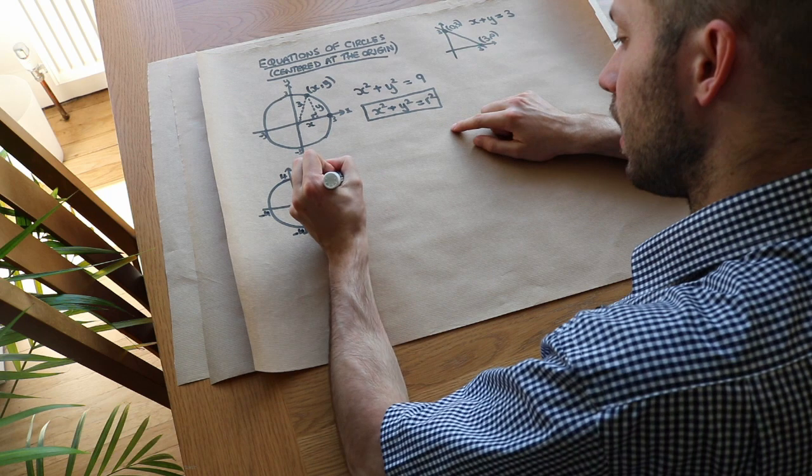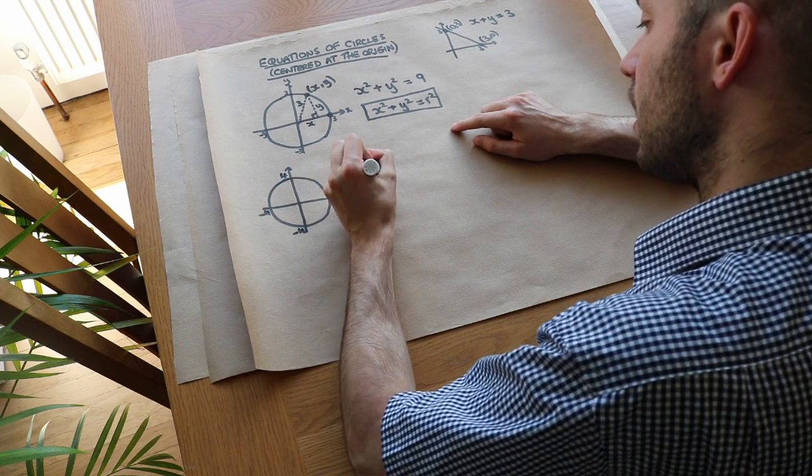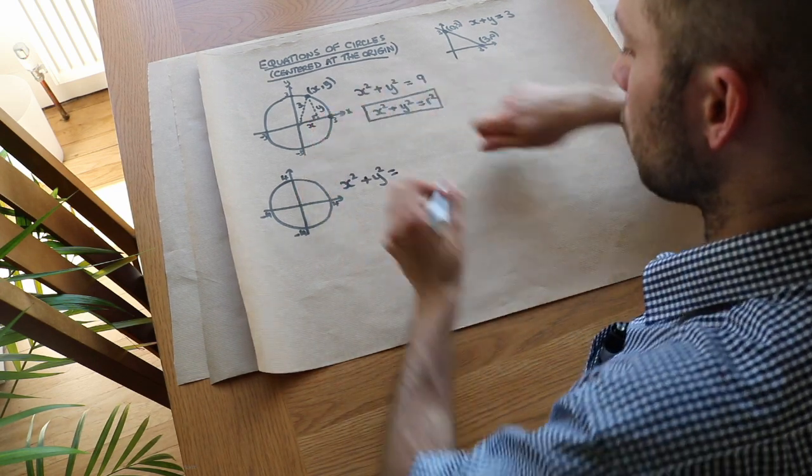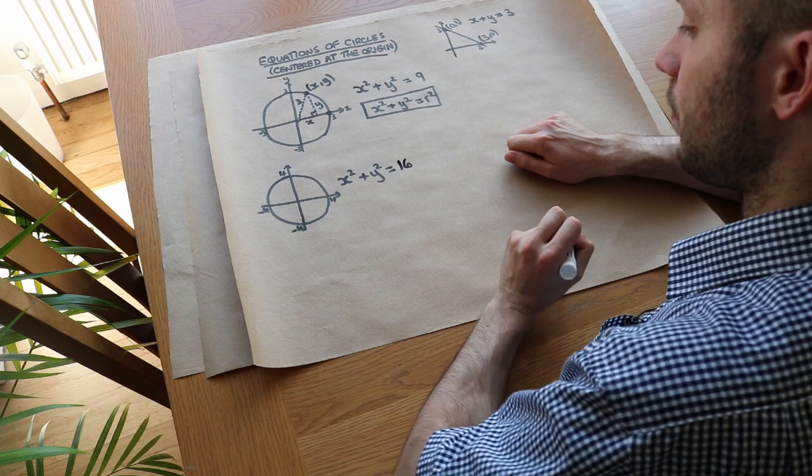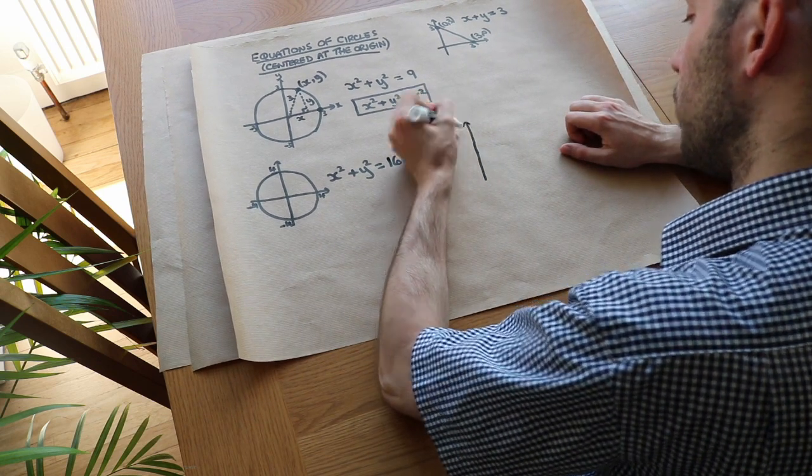Well, we just apply this formula here. It's going to be x squared plus y squared equals radius squared. That's 4 in this case, that radius is 4, 4 squared is 16.